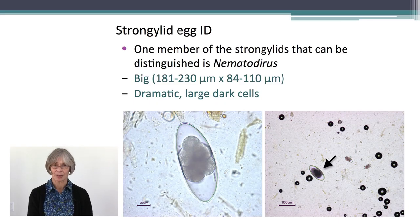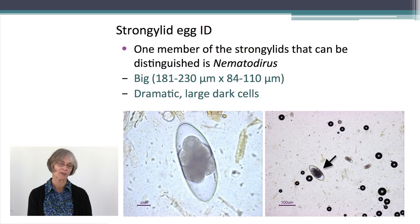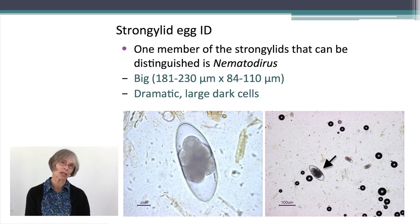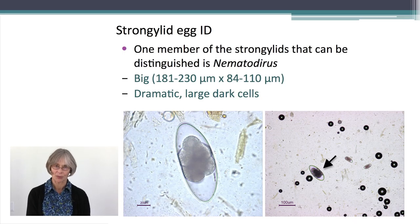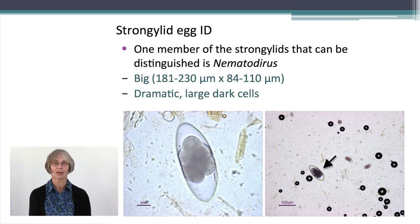There is one member of this strongylid group that we see in the eastern US that is distinctive and can be identified specifically — that's a worm called Nematodirus, which makes absolutely enormous eggs. In the picture you can see the Nematodirus egg is at least twice the size in length of our typical strongylid eggs. This is a parasite that in some parts of the world is quite important, but in the eastern US it is not a particularly important parasite. These eggs are dramatic and always exciting to see when they're there.